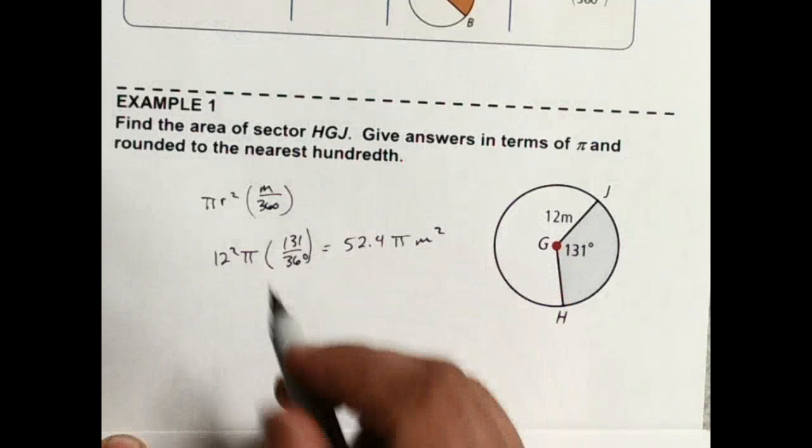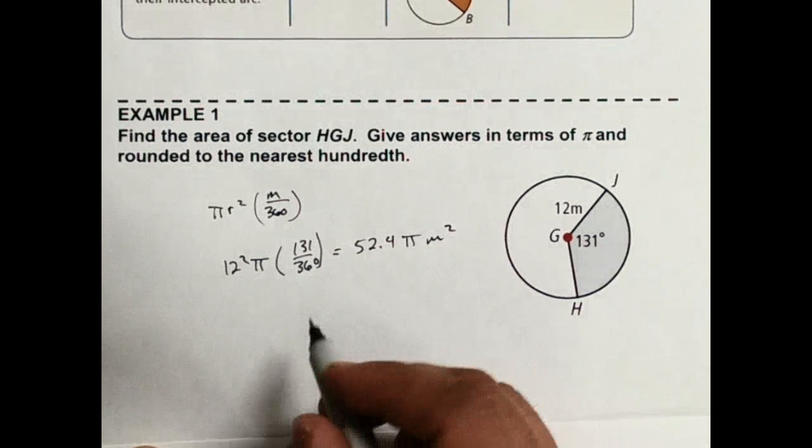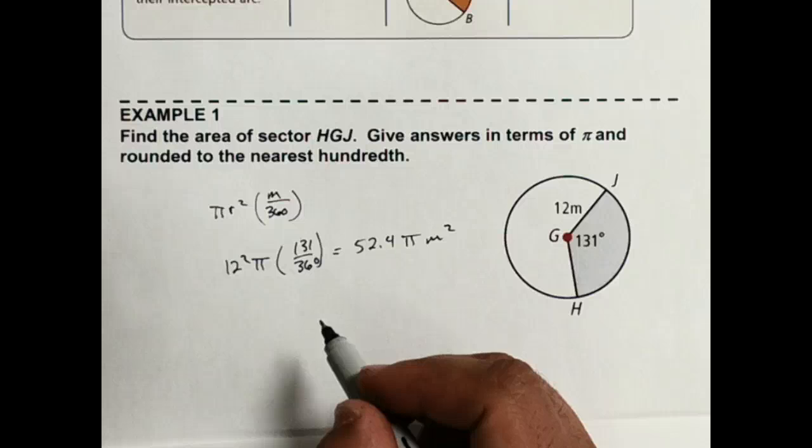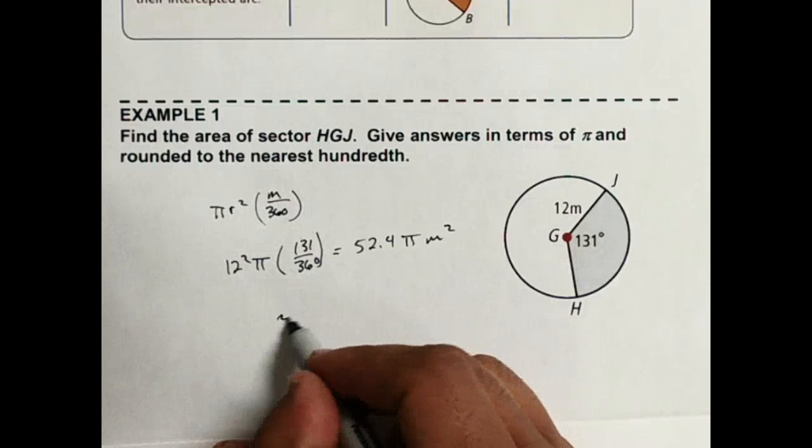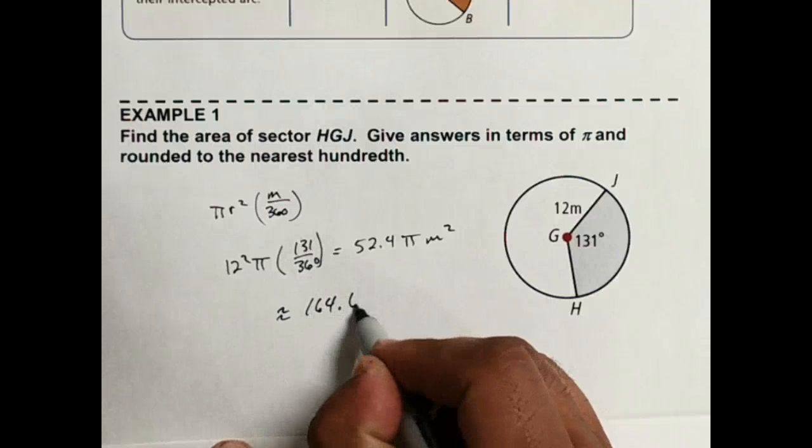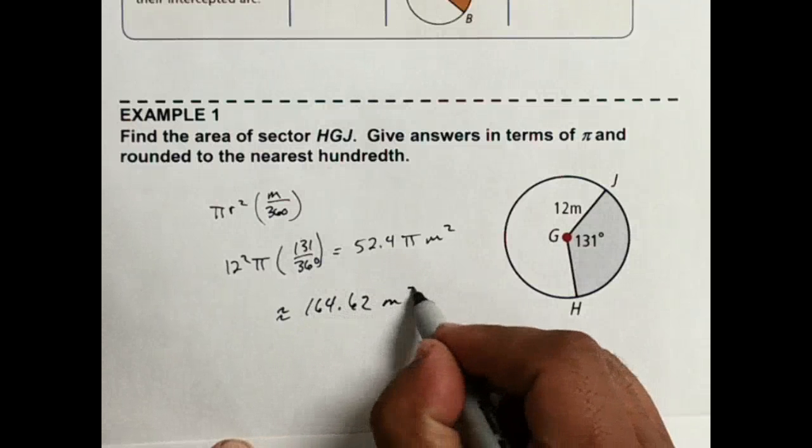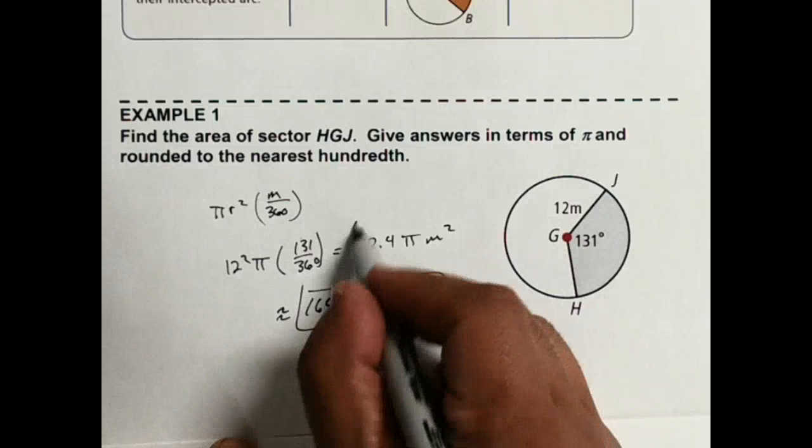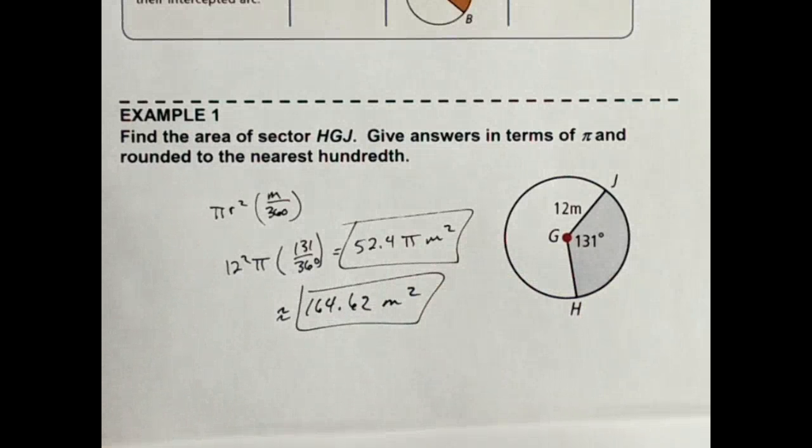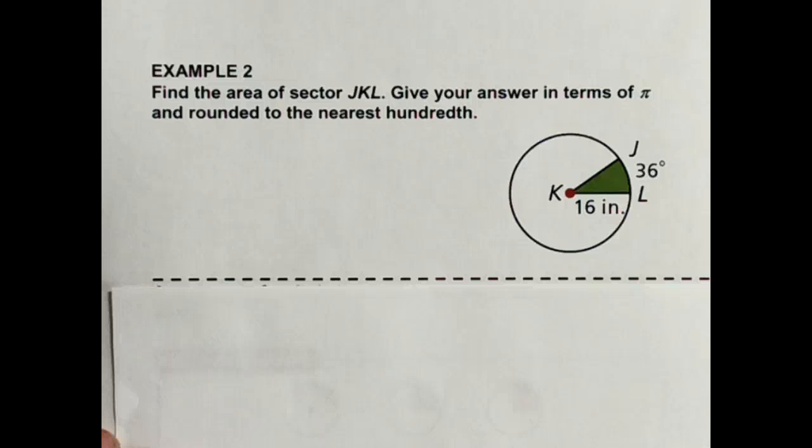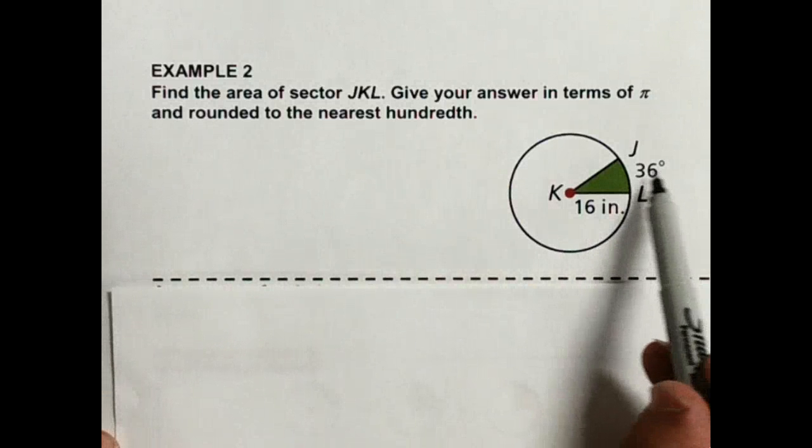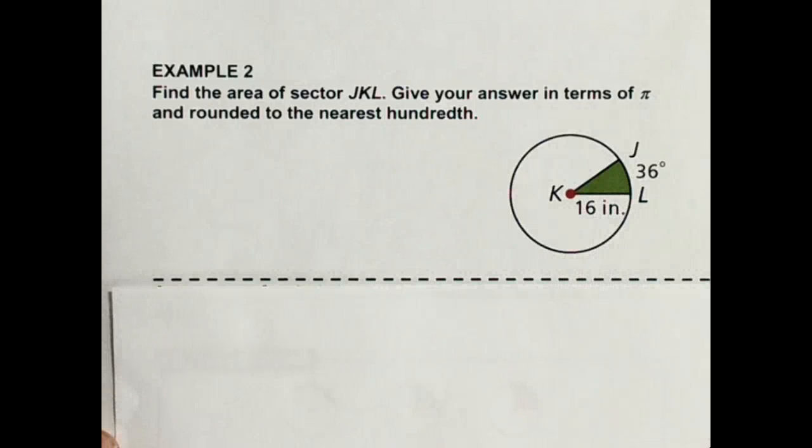It does say to also round it to the nearest hundredth. So I'm going to put that in the calculator. And that comes out to be about 164.62 meters squared. All right, so two answers there on that one. Number two, I'm going to let you do that one. It's the exact same type of problem. You have 36 degrees and you know your radius is 16 inches.